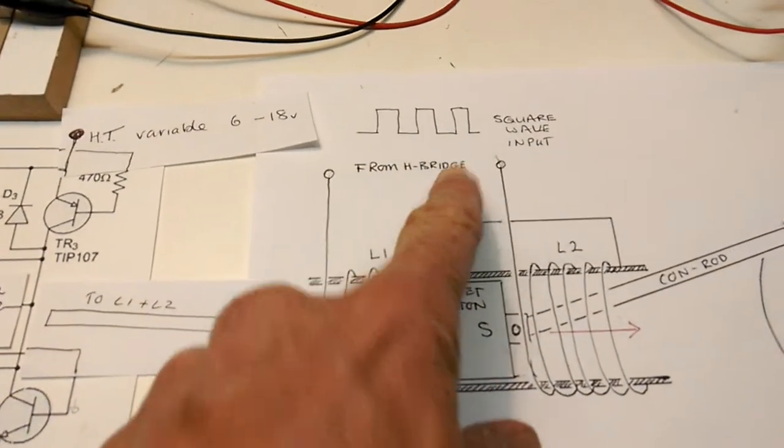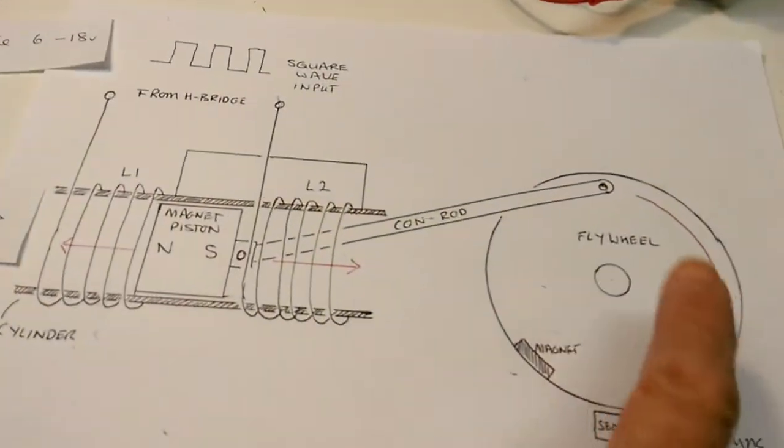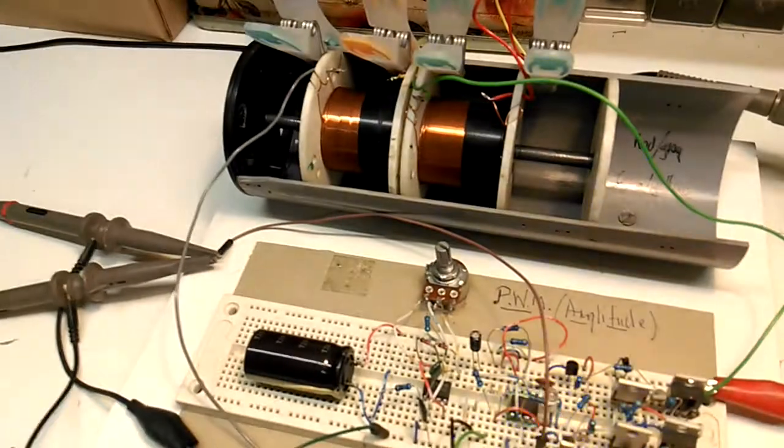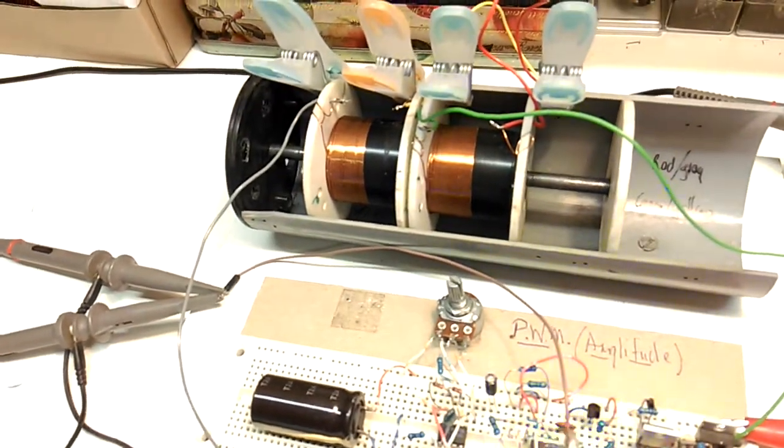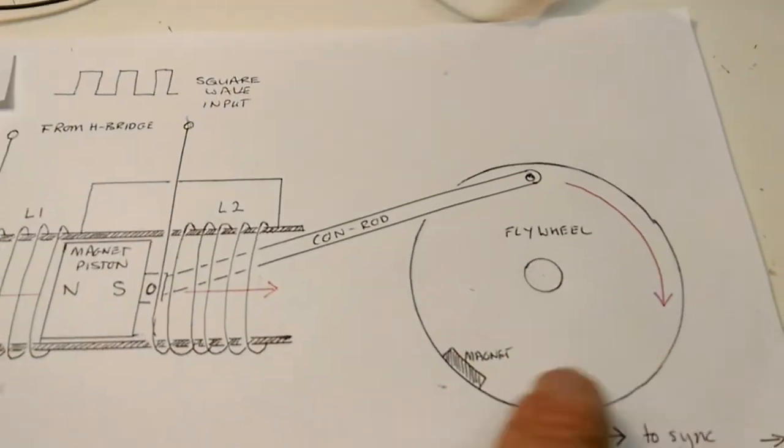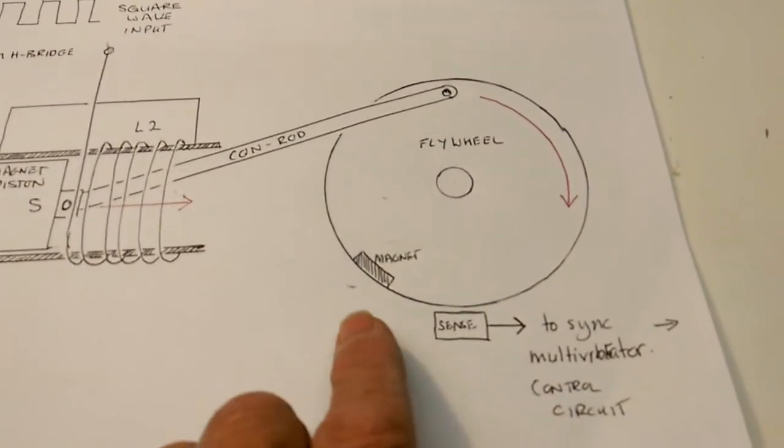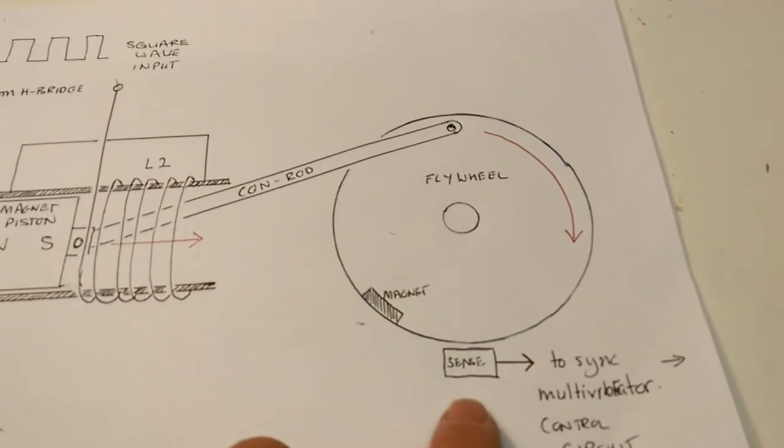Which is supplied by the square wave and would run a flywheel. At the moment this is resonating at about 8hz, 9hz. But with a balanced flywheel on you could run this at any speed. On here there's a control circuit.